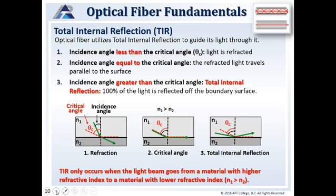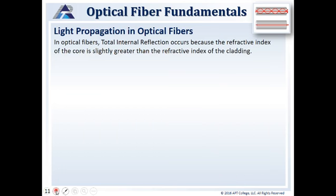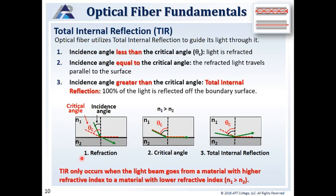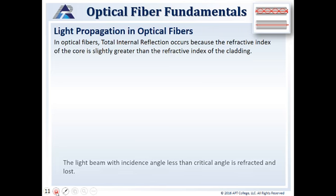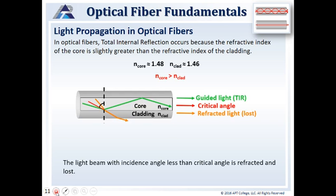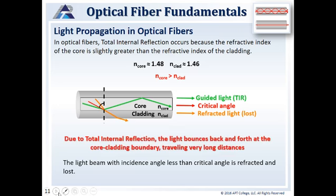Total internal reflection only occurs when a light beam goes from a material with a higher refractive index to a material with a lower refractive index. This is why the core of our glass always has a higher refractive index than the cladding. In optical fibers, total internal reflection occurs because the refractive index of the core is slightly greater than the refractive index of the cladding — it doesn't need to be much more. So we have this mirrored effect on the inside of our core, with light bouncing off every surface inside that core down the length of the fiber. The light beam with an incident angle less than the critical angle is refracted and lost. Due to total internal reflection, the light bounces back and forth at the core-cladding boundary — this is how light travels such a long distance, basically inside a mirror.